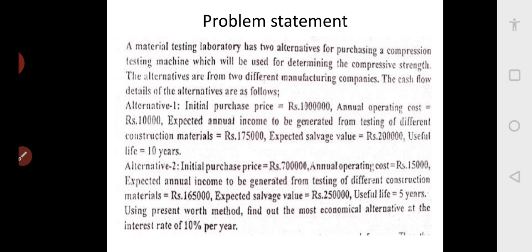A common person might say, alternative 2 is only 7 lakh rupees — let us buy this for 5 years and see what happens after. The initial cost is less. But now let us solve it using economic formulas so that you will understand it in a better way.